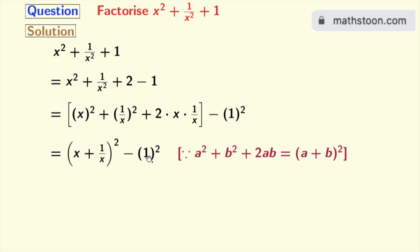Now if we look at this, we can see that this is in the form of a square minus b square, where a is x plus 1 by x and b is 1.